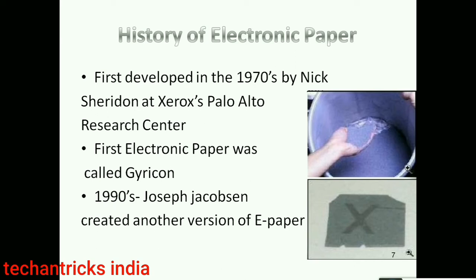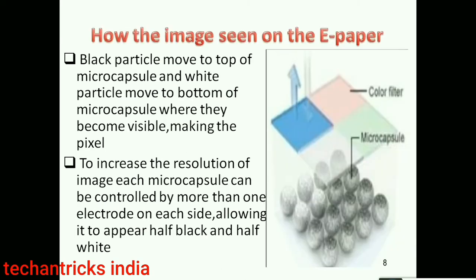How can an e-ink paper display image be seen? There are two particles: black and white. Black particles sit on the top of the micro-capsules and white particles on the bottom. The combination of these can form images seen on the screen, and this can increase the resolution of the image.